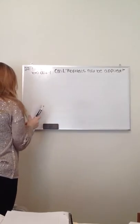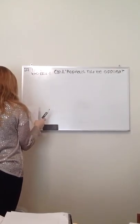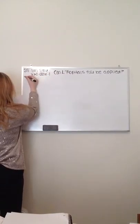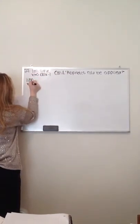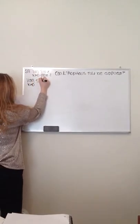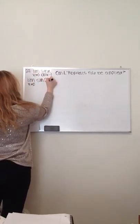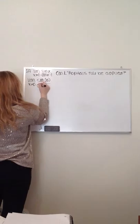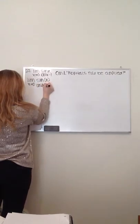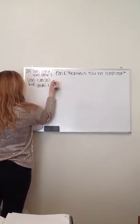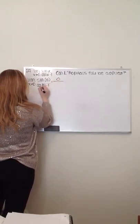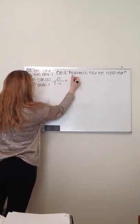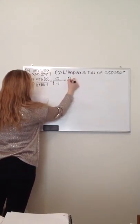So first, we're just going to plug zero into the function. Limit as x approaches zero to the sine of zero over the cosine of zero minus one. The sine of zero is zero and the cosine of zero is one minus one, so it equals zero over zero.